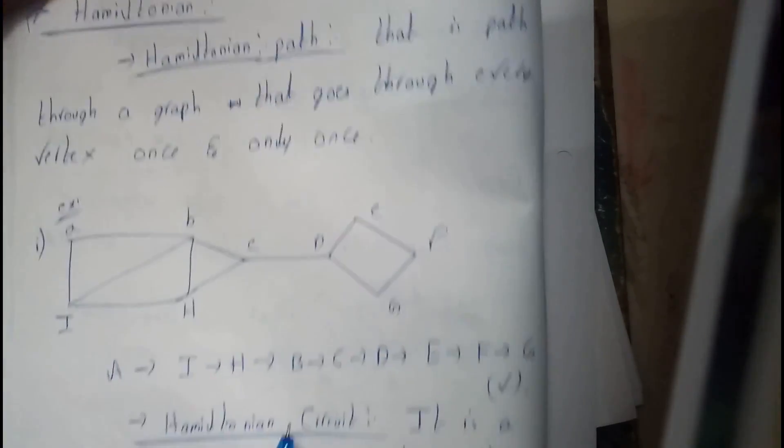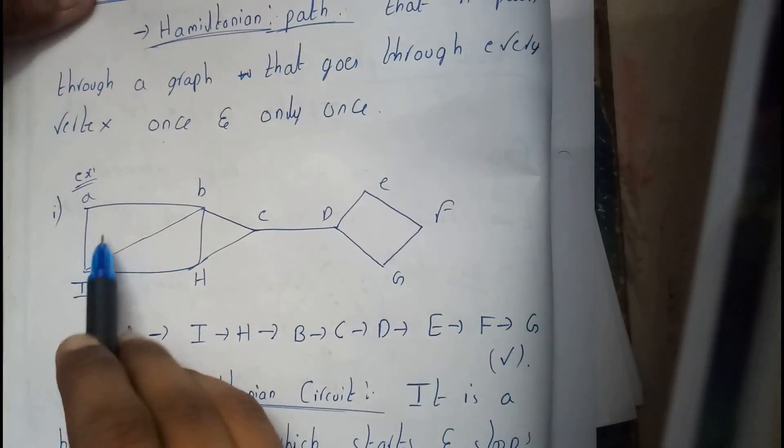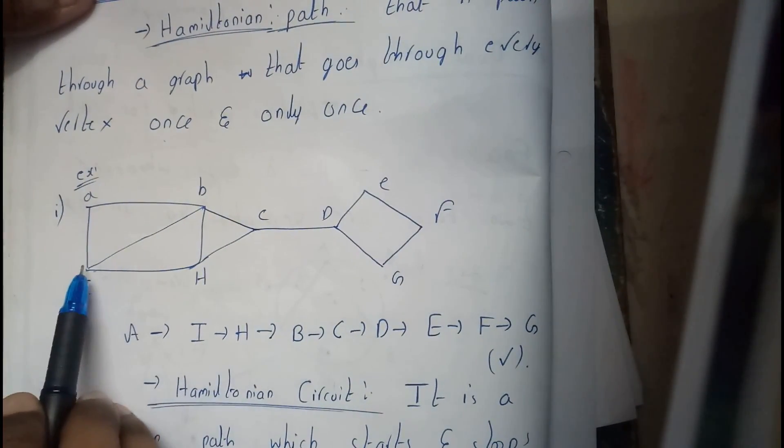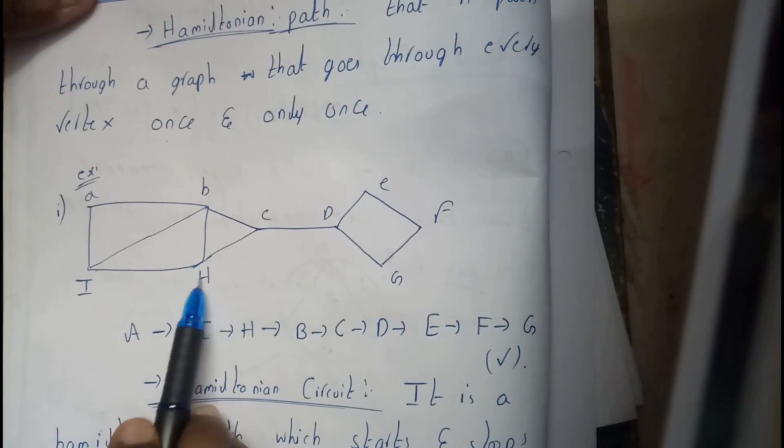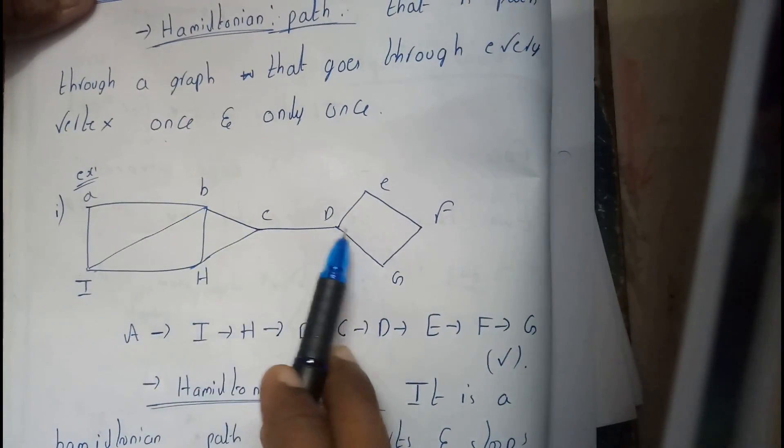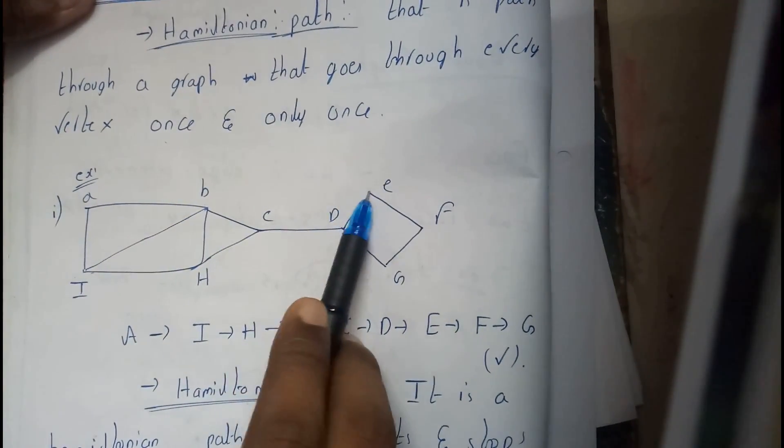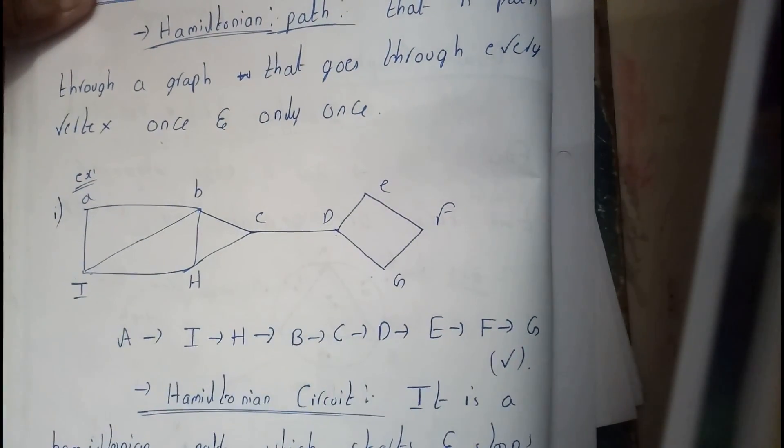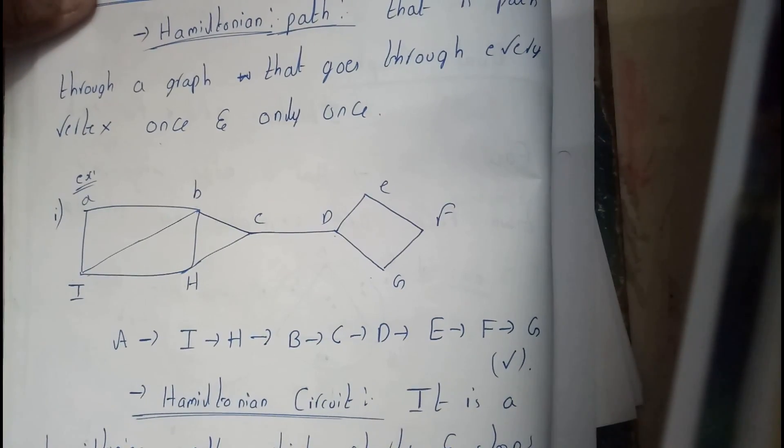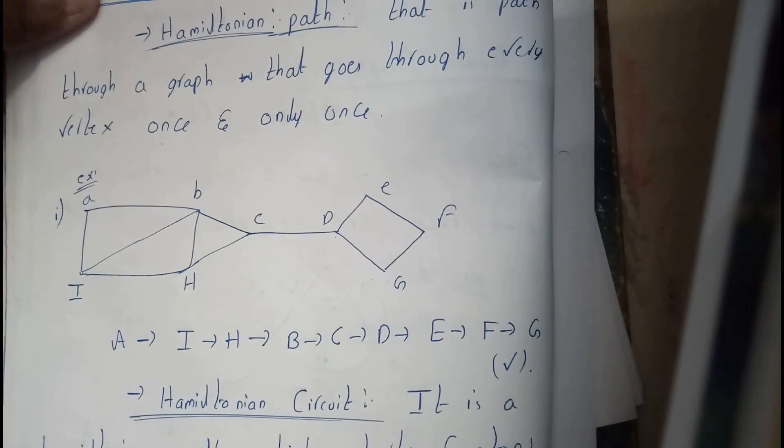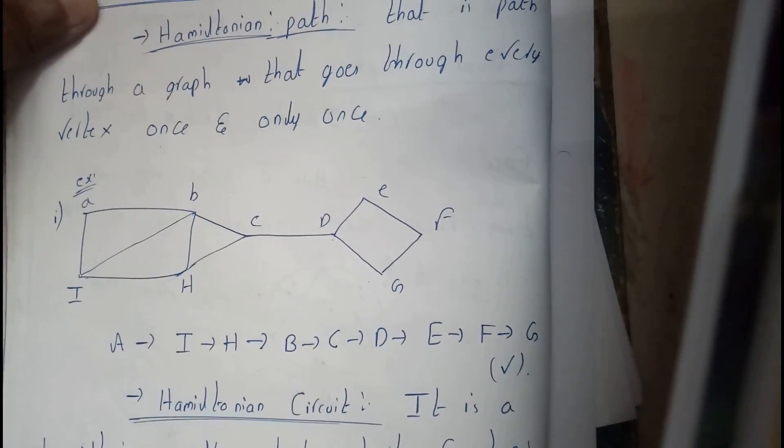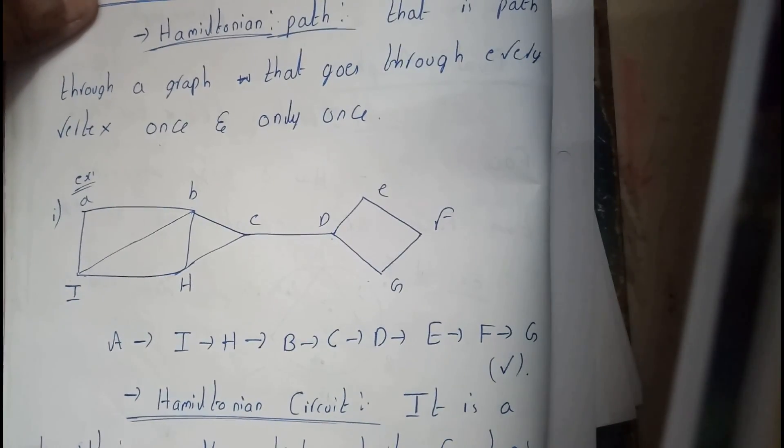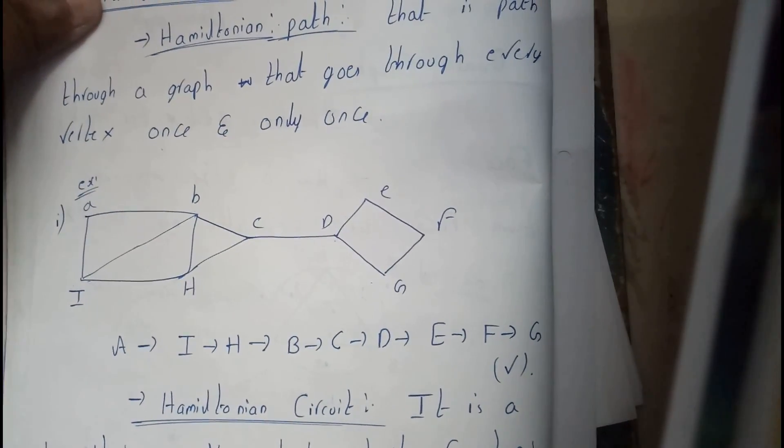So this is an example, I have just drawn a diagram. A to I, I to H, H to B, B to C, C to D, D to E, E to F, F to G. I passed through all the vertices and I have skipped few edges. That's fine, but the main topic is that you should pass through every vertex.